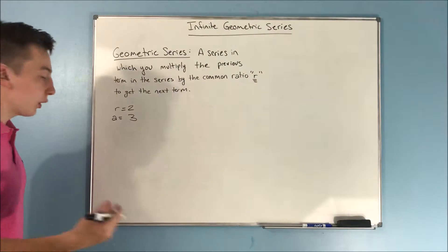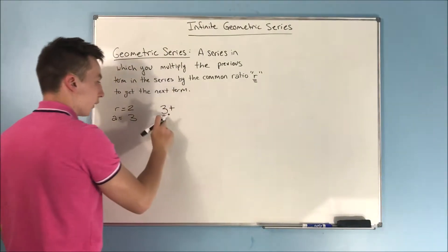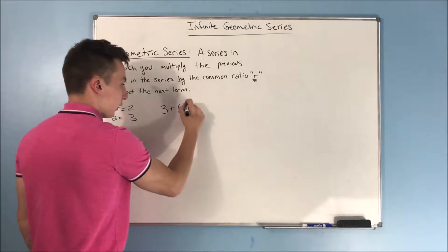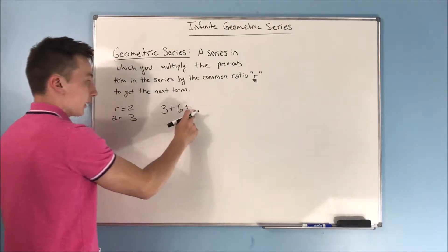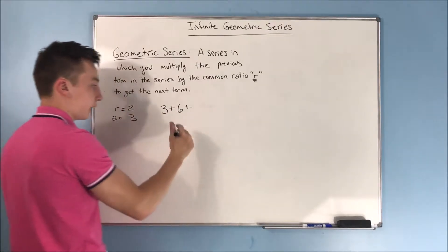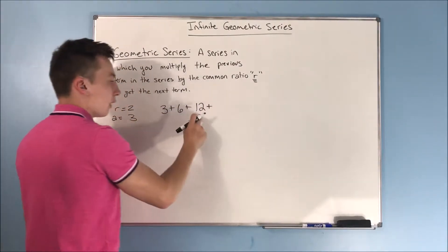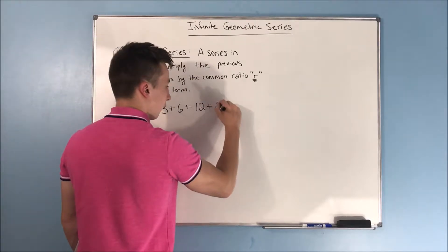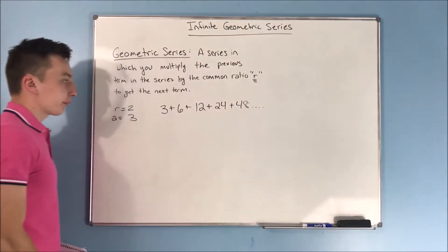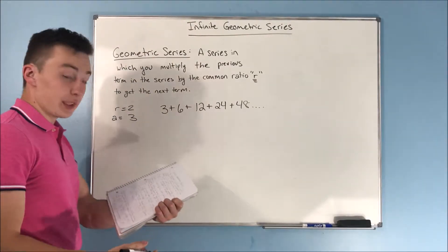Our series would look like this: 3, plus our previous term times 2 which is 6, plus 6 times 2 which is 12, plus 24, 48, and so on. That is an example of a geometric series.